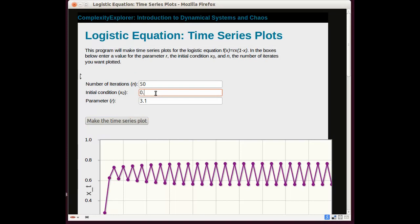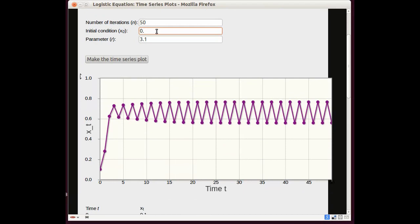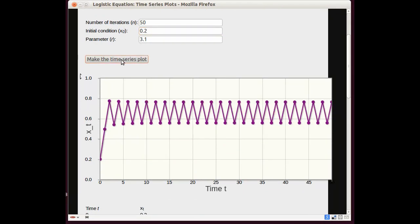Let's try, scroll down so we can see the plot, 0.2. The behavior for the early time is different but in the long run we see the same behavior. So different orbits are getting attracted to the cycle.